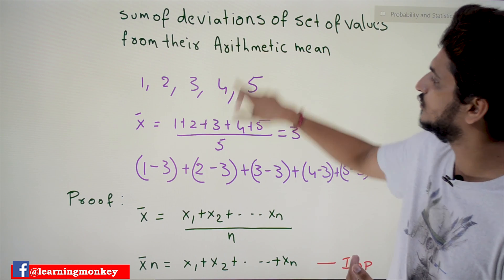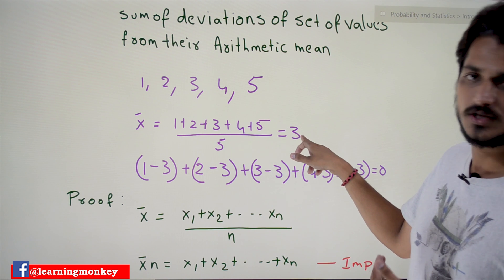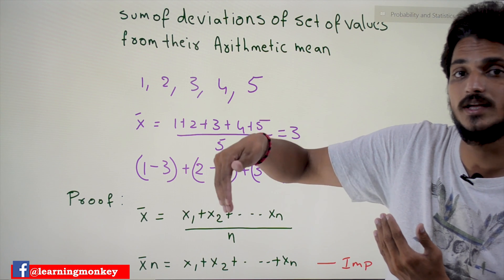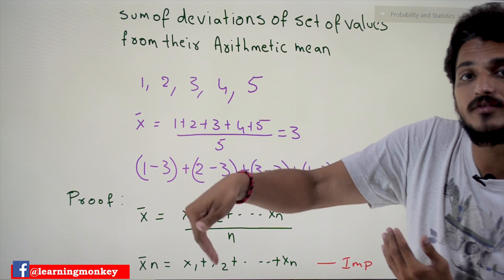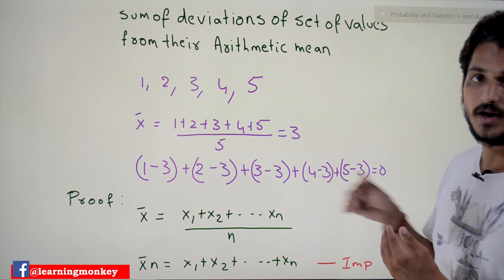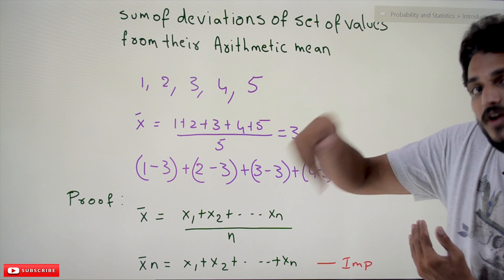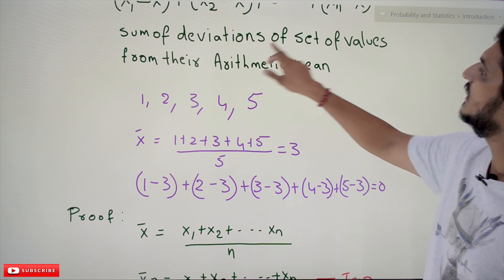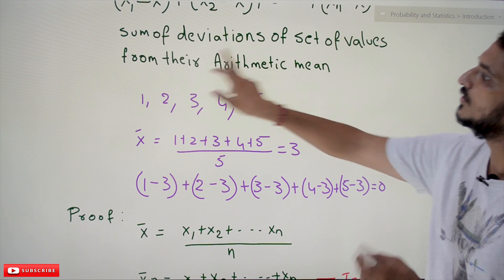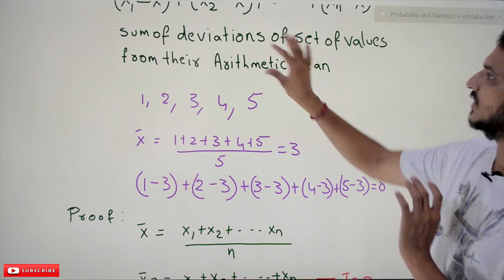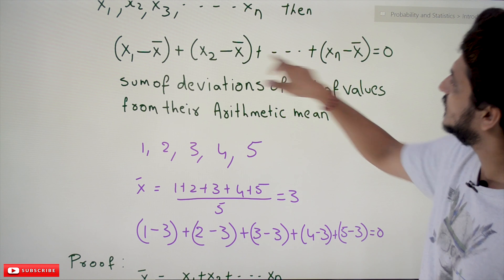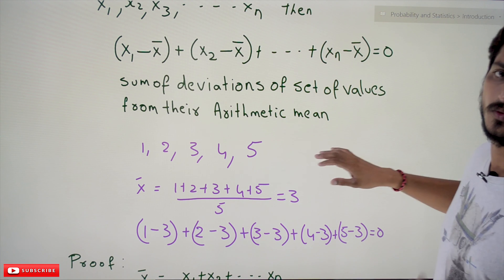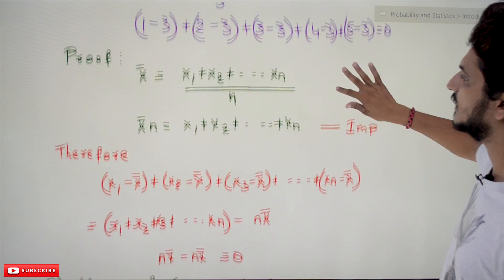Each term tells us how much a data point is deviated from the mean value. Our mean is 3 — so how much is the 1st data point deviated, the 2nd data point, the 3rd data point? That is what deviation means — the sum of deviations of a set of values from their arithmetic mean equals zero. Let's understand the proof of this.